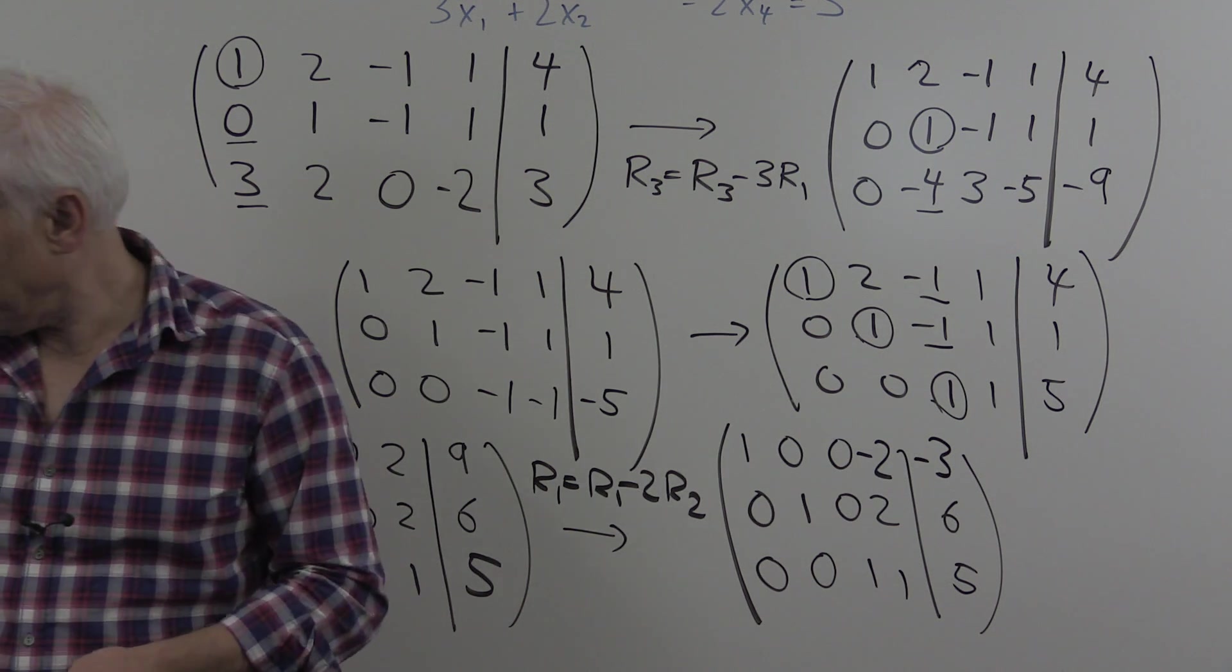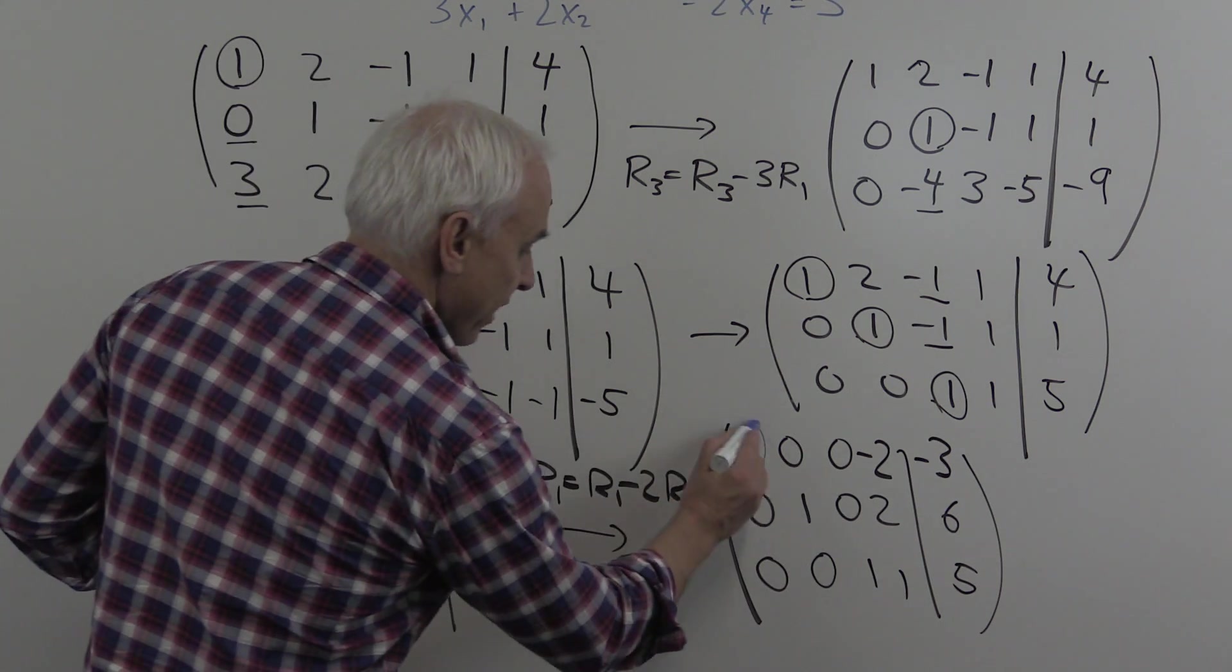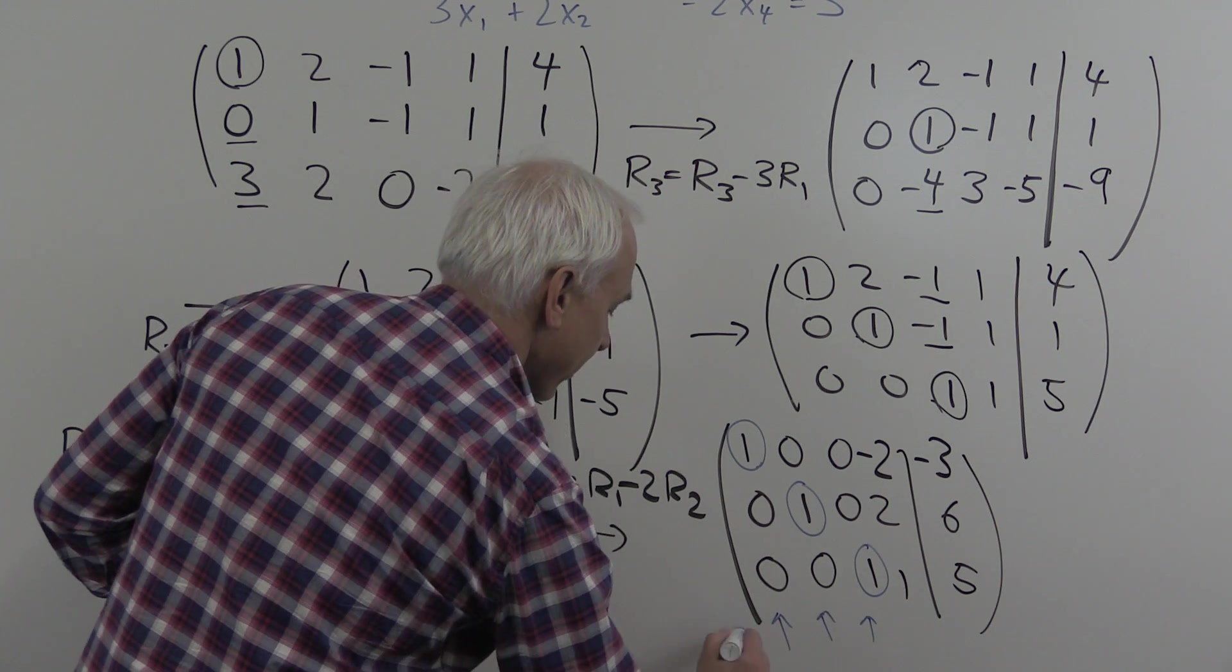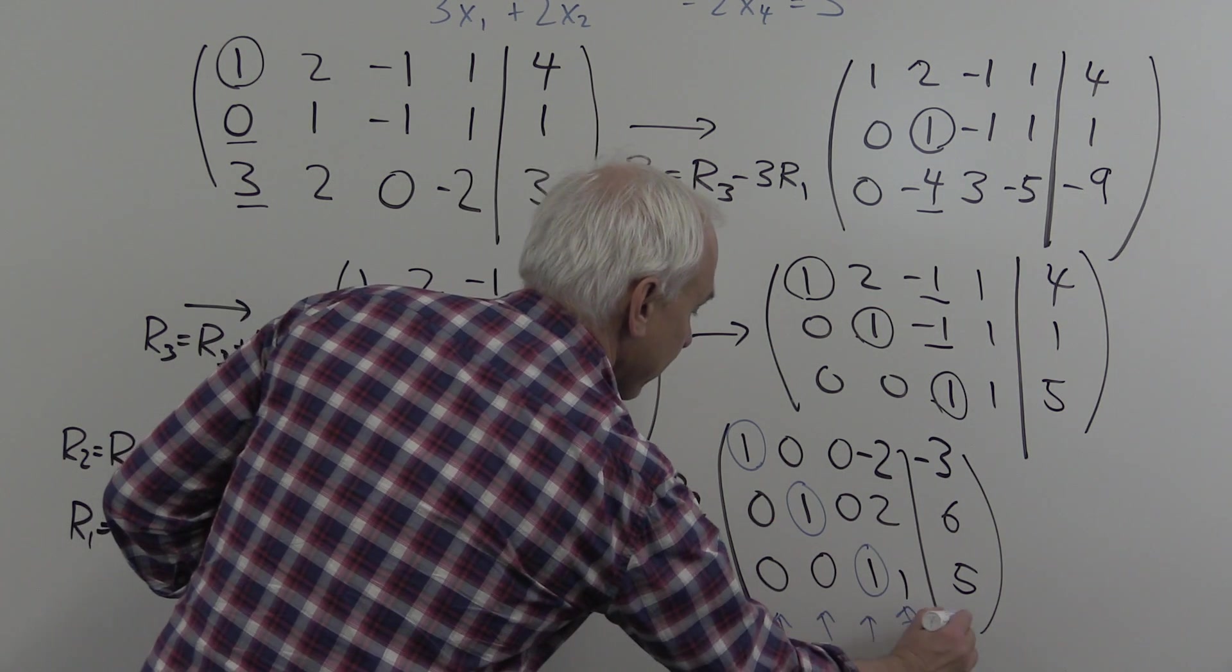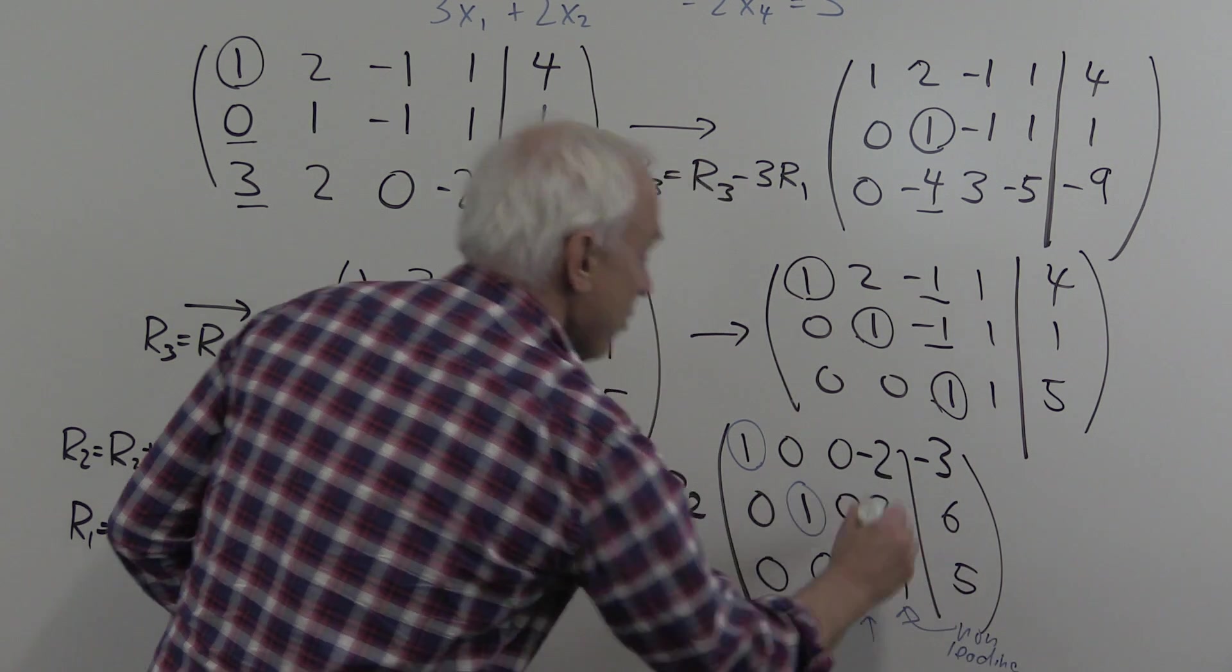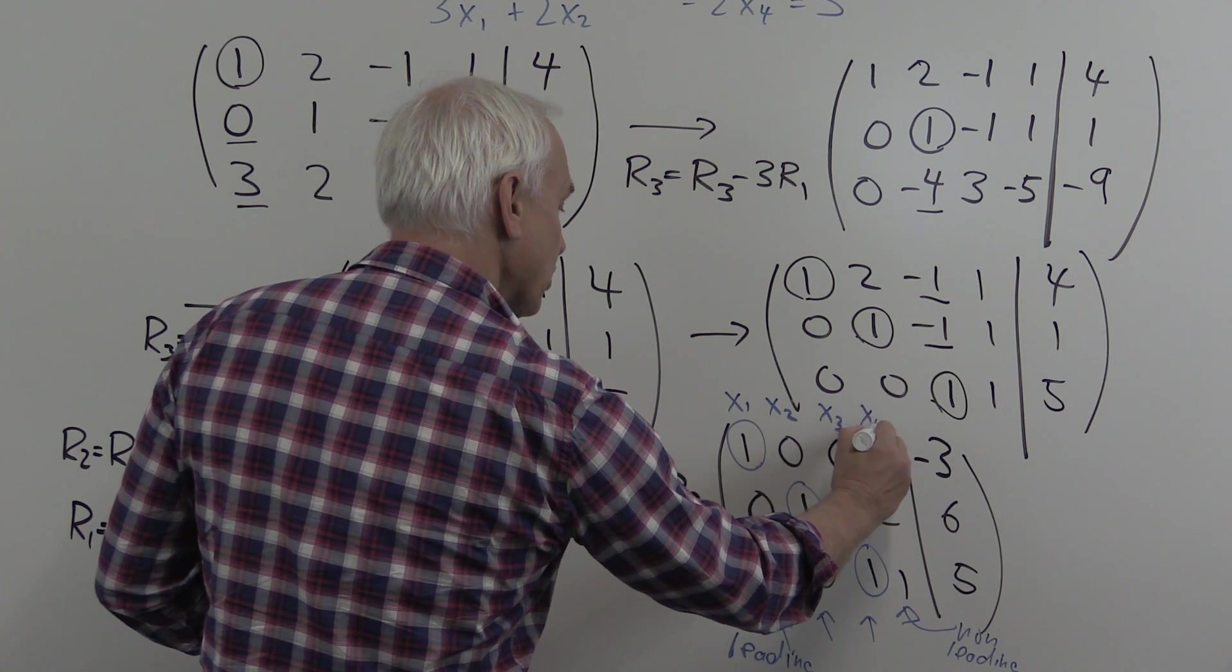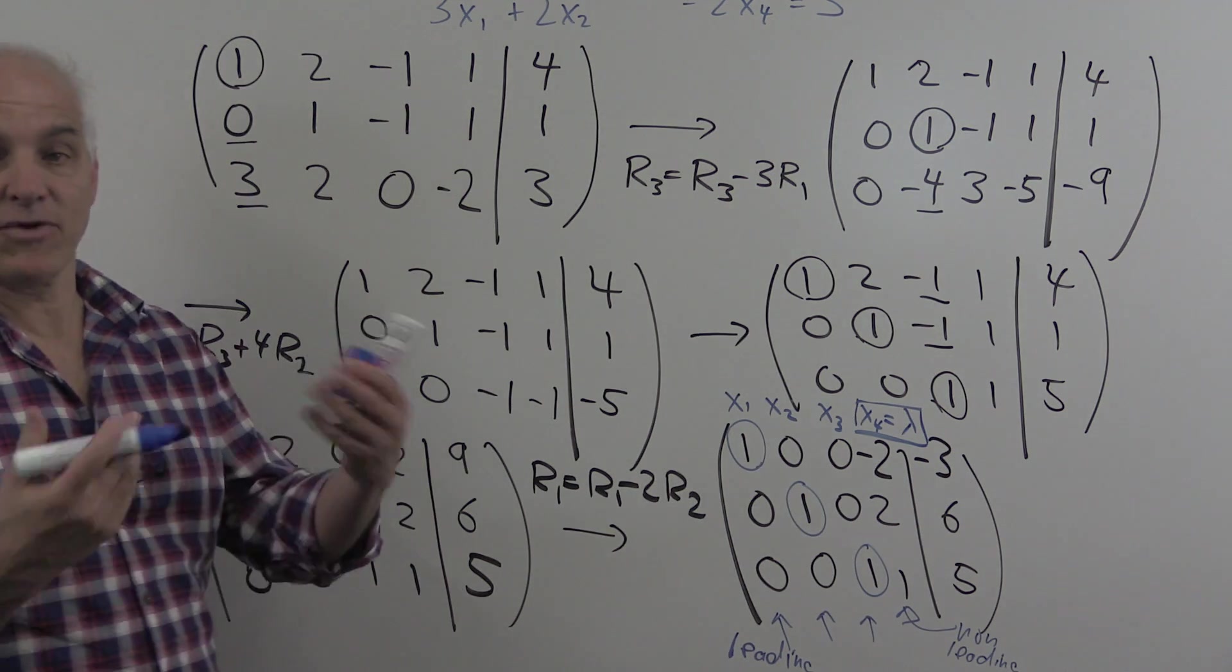We have our equation now in fully reduced row echelon form. So we have our leading entries here. So here are our leading columns. And this one here is non-leading. That's going to correspond to a parameter. I remind you that our variables were x1, x2, x3, and x4. We're going to set this x4 equal to a parameter lambda. It's a free variable.